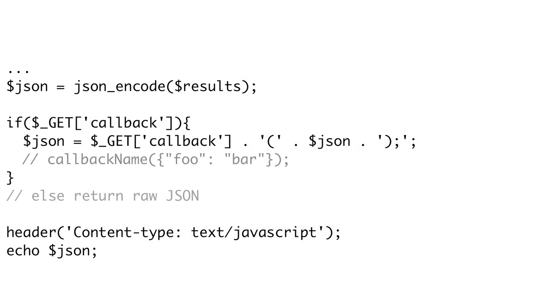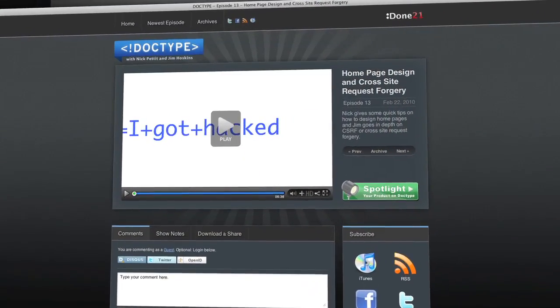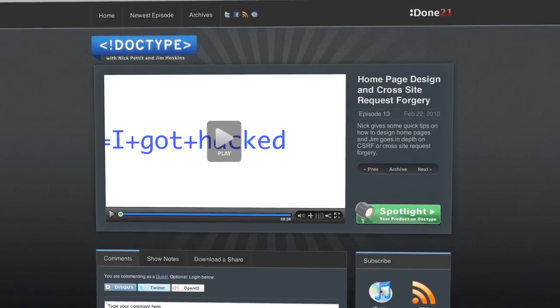If you want to create a web service that supports JSONP, it's pretty simple. You just want to check for a callback parameter, and if it exists, wrap that name plus parentheses around your normal JSON data. If there is no callback parameter, just return your normal JSON response. Because JSONP uses the script tag, you're limited to only GET requests. And since it circumvents the same-domain policy of Ajax, the user's cookies will be sent along with the script request, so be aware that you'll be vulnerable to cross-site request forgery attacks. See episode 13 of Doctype for more information about CSRF attacks.